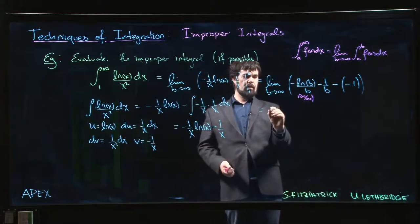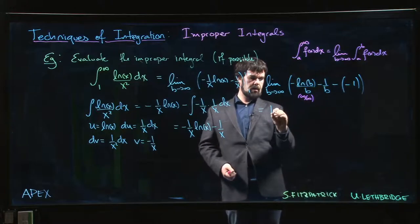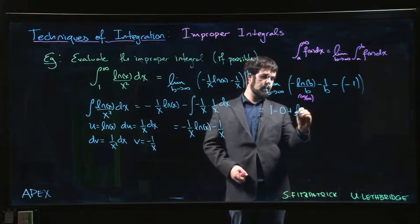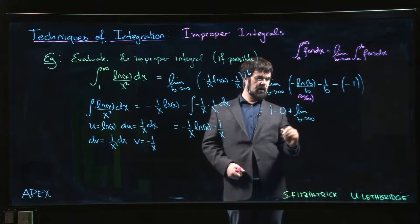So it's going to be, let's deal with the parts that we can already deal with. We have 1 minus 0, and then we're going to have the limit as b goes to infinity, and this is via L'Hopital's rule.